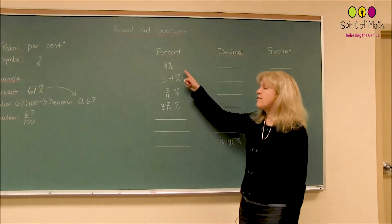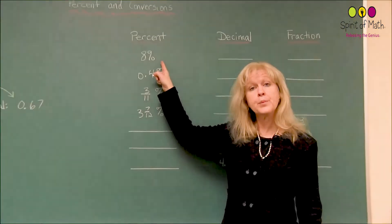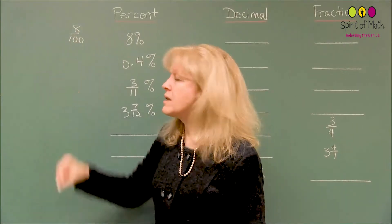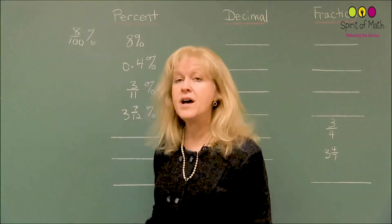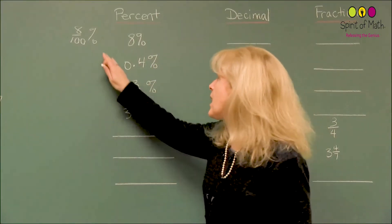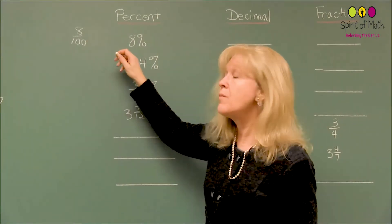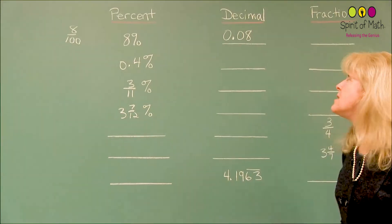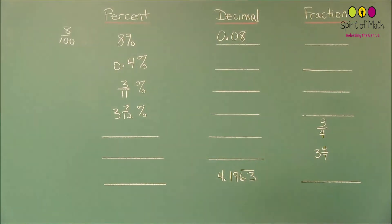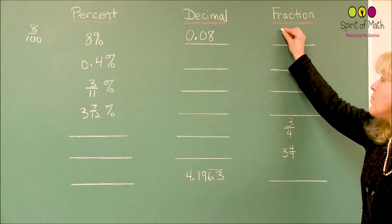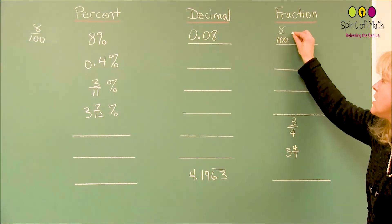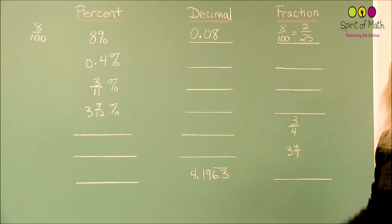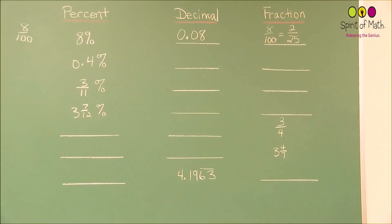So let's look at how you do those conversions. Starting with a simple example: 8 percent. Now 8 percent is the same as saying 8 divided by 100. As a decimal, you've got 0.08. And as a fraction, it is 8 divided by 100, which when you reduce — 4 goes into 8 twice and 4 goes into 100 twenty-five times — so you've got 2 over 25.